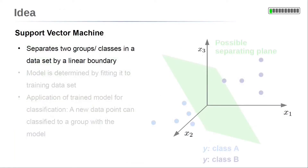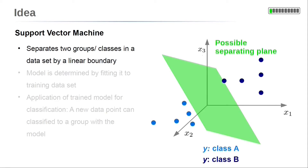Let's start by looking at the idea of support vector machines. Consider a typical classification problem with two different classes: class A, the light blue dots, and class B, the dark blue dots. The idea is to separate these groups geometrically by a linear boundary. On the right side, an example is sketched with three input variables x1, x2, and x3. The separating plane is shown in green. It is determined by the training data and a process of fitting the support vector machine model to the data.